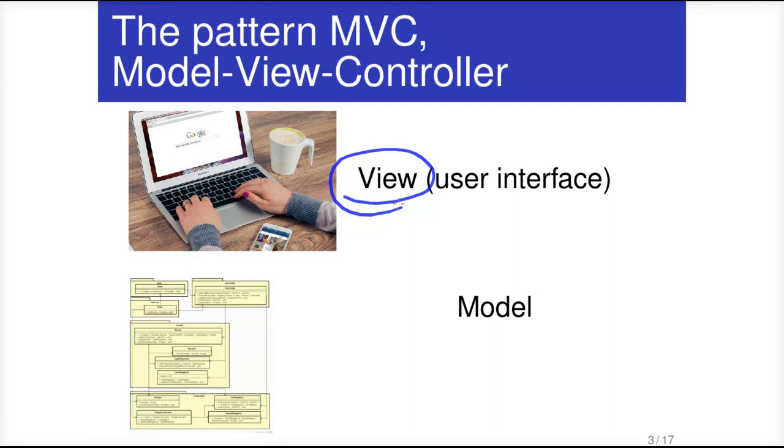And the other subsystem or layer identified by the model view controller pattern is the model. So the model is the program state, the program's view of the reality. So these are two clearly different things. To interact with the user, and to model the reality.